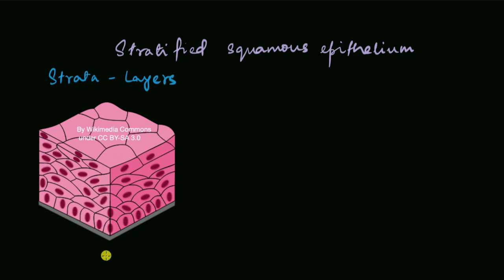You must have guessed that diffusion of substances through this whole thing, all these layers, is quite difficult, and that is indeed the case. Stratified squamous epithelium is not meant for diffusion. Then what is it meant for? It is meant for protection, which makes sense because it has so many layers.